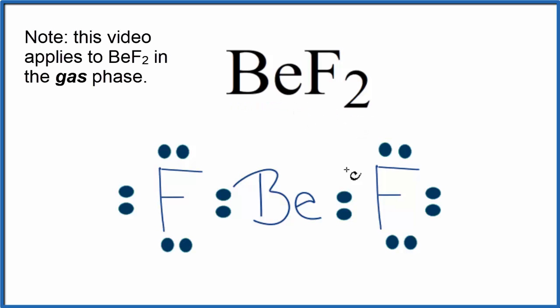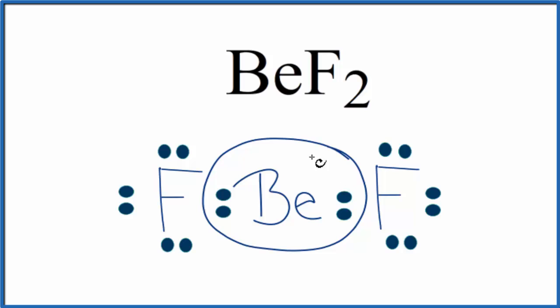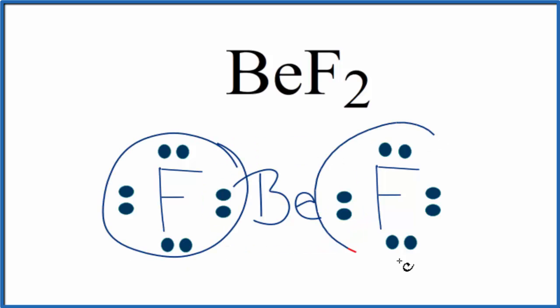So the first thing we need is a Lewis structure. And when you look at the Lewis structure, it's kind of interesting. The beryllium doesn't have an octet. That's okay because beryllium is an exception. It only needs four valence electrons there. Fluorine, both of the fluorine atoms, those have octets.